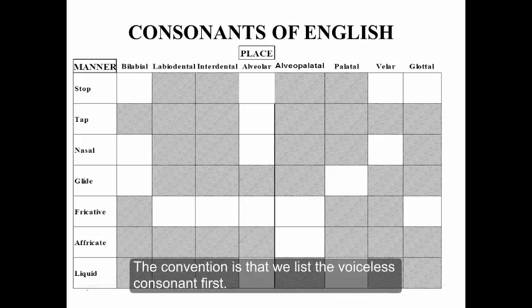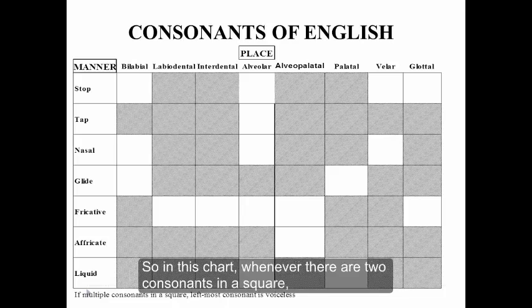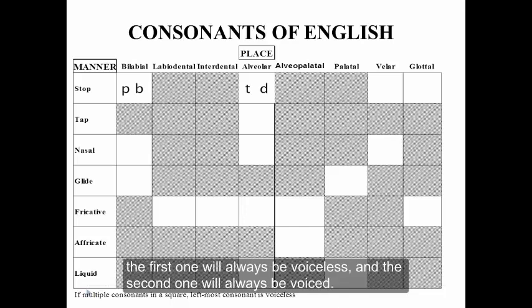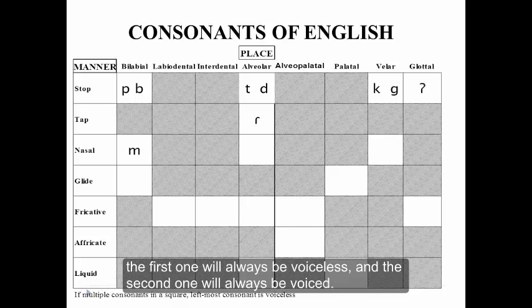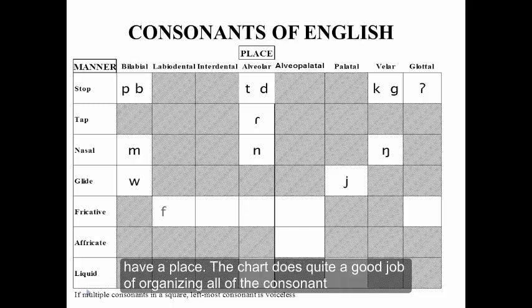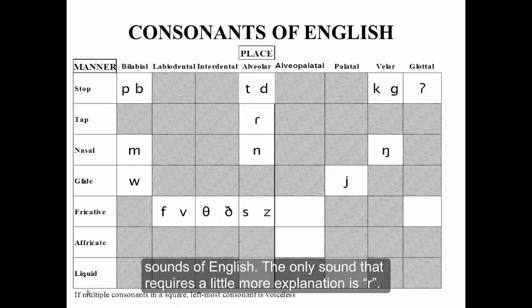The convention is that we list the voiceless consonant first. So in this chart, whenever there are two consonants in a square, the first one will always be voiceless and the second one will always be voiced. As we fill in this chart, you'll notice that all of the symbols we've been discussing have a place. The chart does a really nice job of organizing all of the consonant sounds of English.